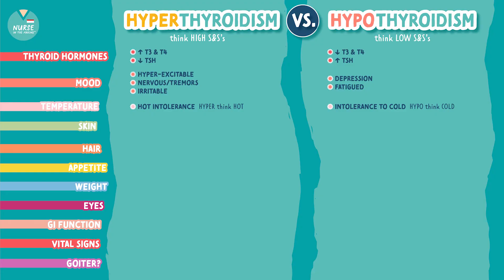Let's look at the skin and hair. Remember the thyroid gland is responsible for growth, so in hyperthyroidism we have a lot of growth — you're going to see smooth, soft skin as well as soft hair. They're also heat intolerant, which is why you'll see sweaty skin. For hypothyroidism, we don't have a lot of growth going on, so we see dry, brittle skin and even hair loss.